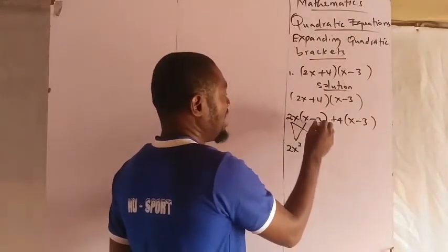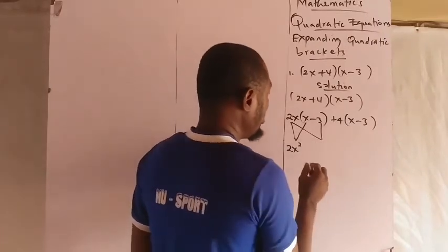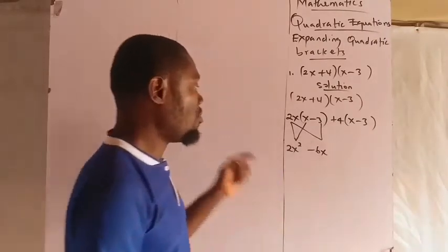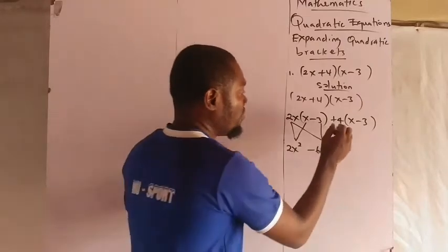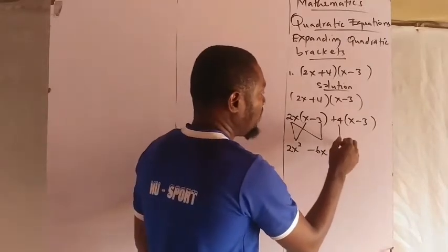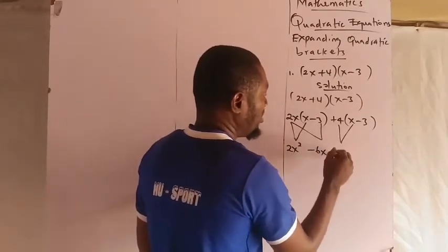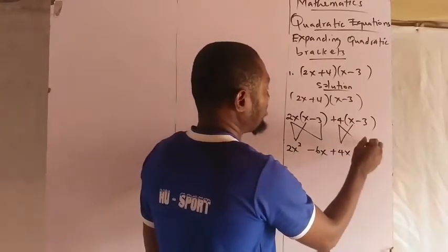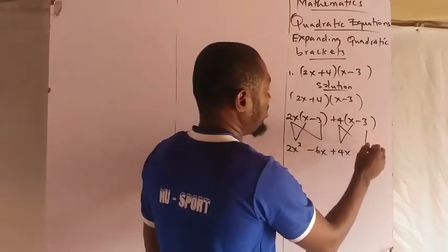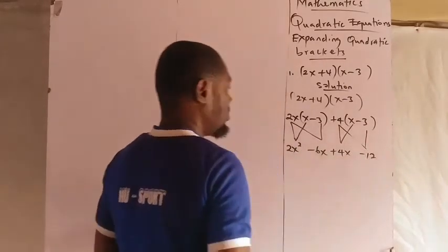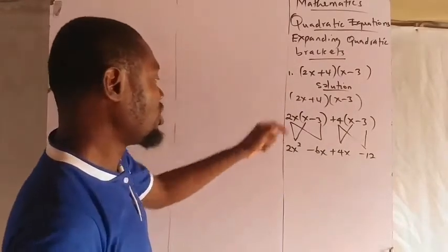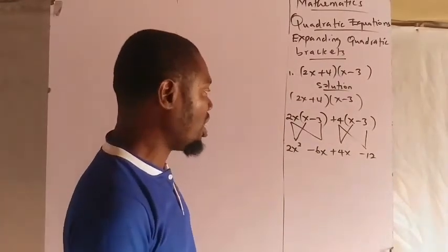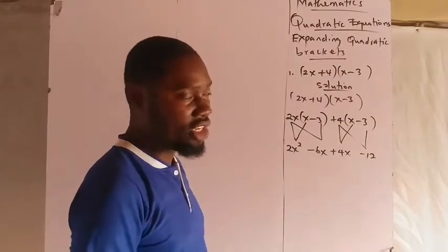2x times minus 3 gives us minus 6x. I'm done with that section. Now for 4: 4 times x gives us plus 4x, and 4 times minus 3 gives us minus 12. So now we have 2x squared minus 6x plus 4x minus 12 as our result.